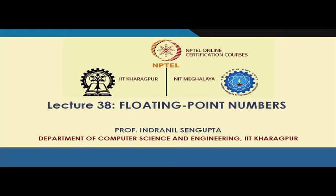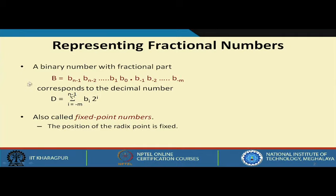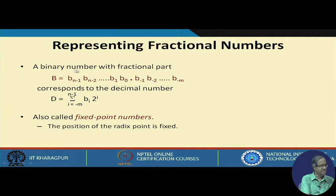The topic of this lecture is floating point numbers. First, let us see the motivation. We want to represent a binary number with a fractional part. In general, any binary number with a fractional part can be represented with binary digits b0, b1, etc., where this dot is the binary radix point. On this side you have the integer part and on this side you have the fractional part.